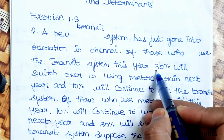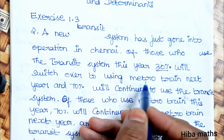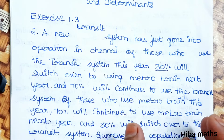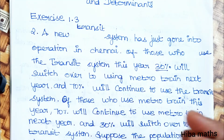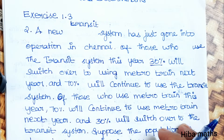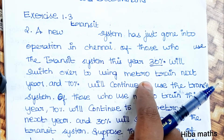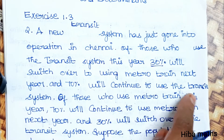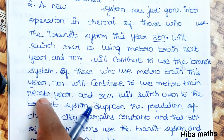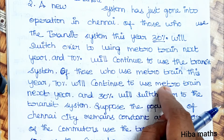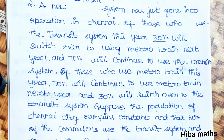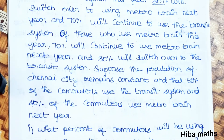In Chennai there is a transit system and a metro train system. Of those who use the transit system this year, 30% will switch over to using the metro train next year. 70% of those who use the metro train this year will switch over to the transit system. So 30% of the transit system stays, and 70% of the metro stays.